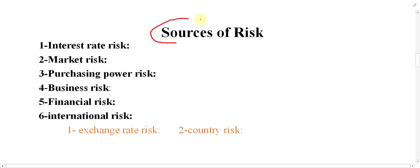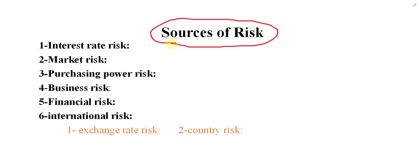The next topic is source of risk. In some books this can be called types of risk, but it is better to call it source of risk. As you can see in this picture, there are six sources of risk: interest rate risk, market risk, purchasing power risk, business risk, financial risk, and international risk — which is divided into exchange risk and country risk.